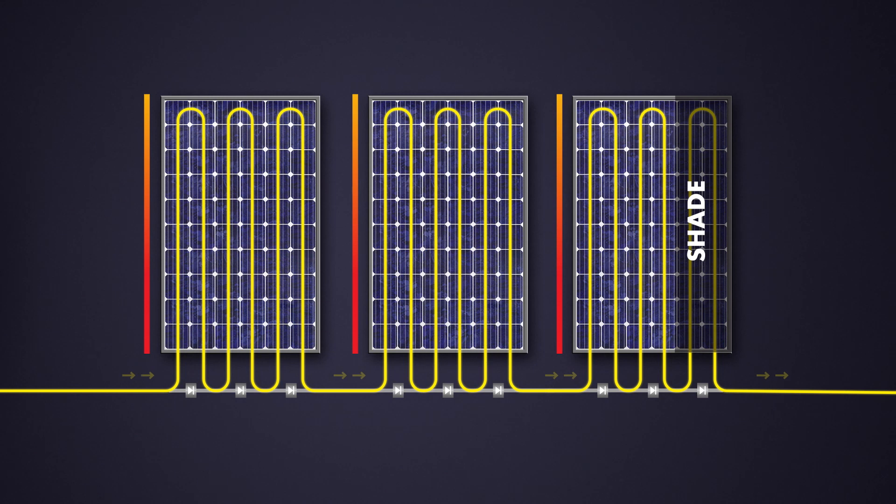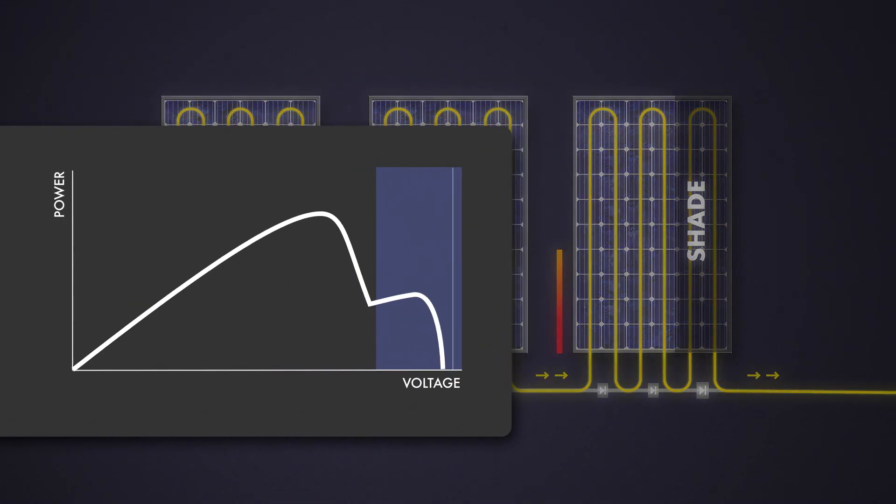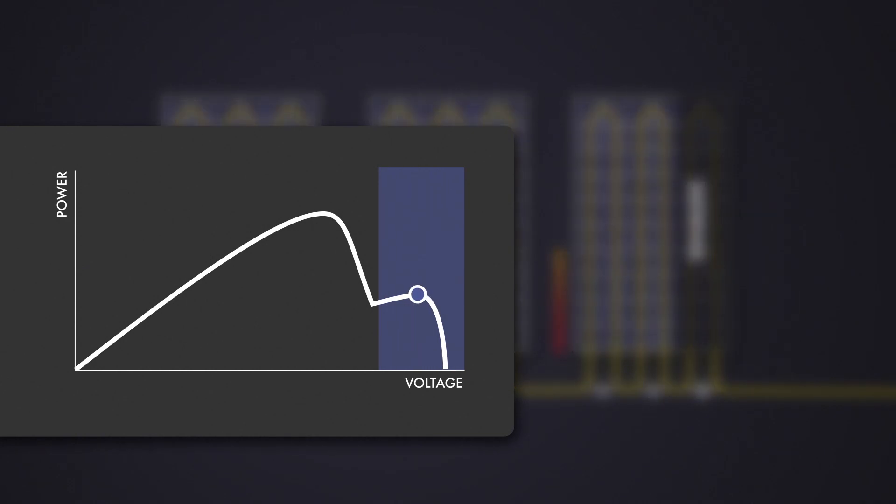In case of a partially shaded PV array when using classic MPP tracking, the current through all PV modules will be limited to the current of the shaded PV module. Due to its classic MPP tracking algorithm, the inverter chose the wrong MPP voltage at a low local maximum powerpoint. The bypass diodes are not active.